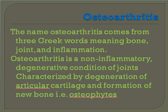Osteoarthritis. The name osteoarthritis comes from Greek words meaning bone, joint, and inflammation. Osteoarthritis is a non-inflammatory degenerative condition of joints characterized by degeneration of articular cartilage and formation of new bone, for example osteophytes.